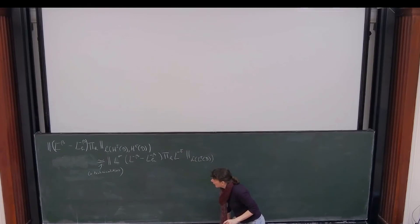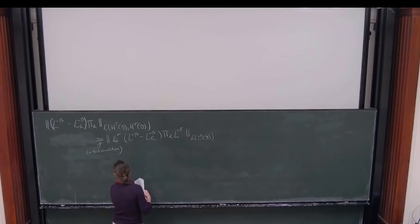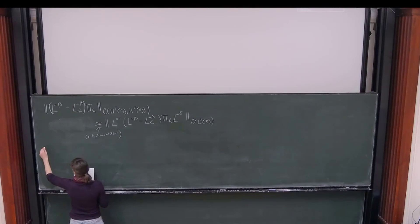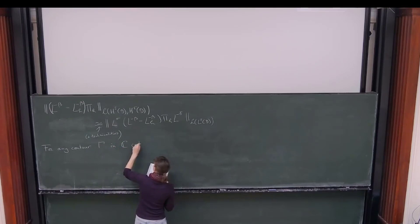And now, we note that the spectrum of both the elliptic operator L and the finite element approximation, because they are self-adjoint, it's just on the positive real line. So, if we find a contour around the spectrum, then we have that we can represent L by the integral over this contour. So, obviously, L to the minus beta. So, this is the functional calculus representation.